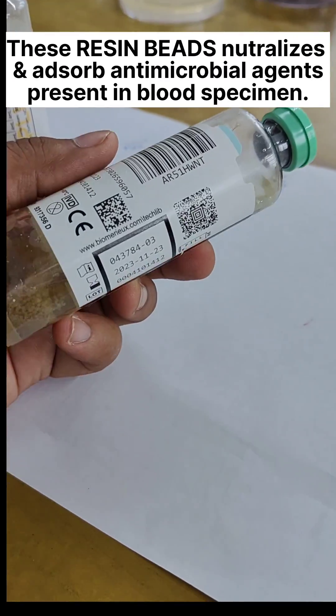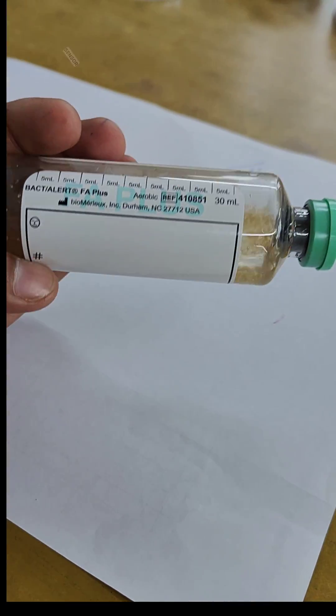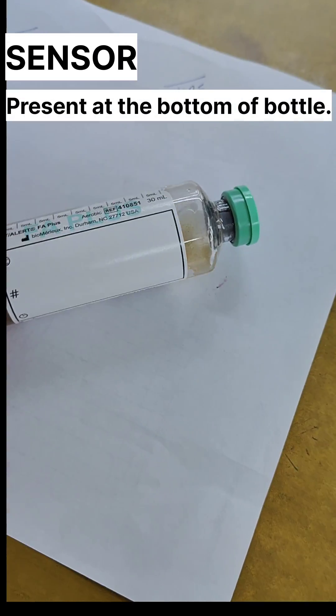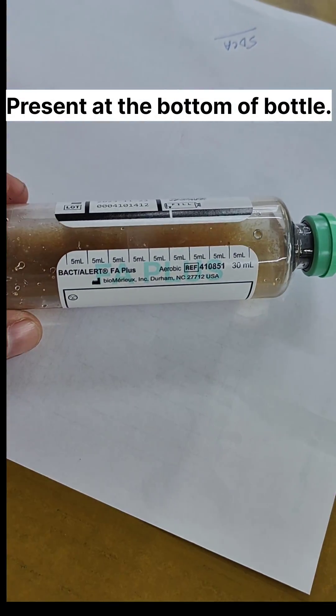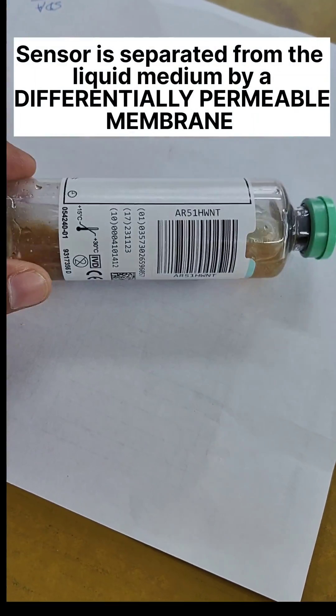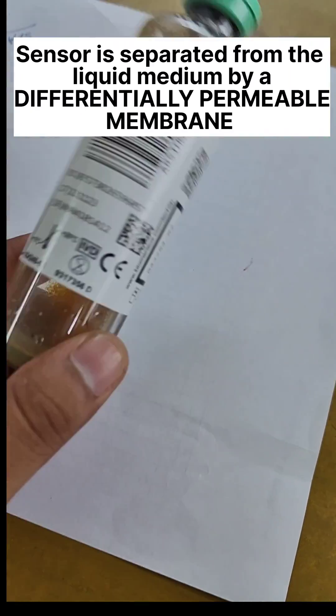You can easily see that a sensor is also present at the bottom of each bottle. This sensor is separated from the liquid medium by a differentially permeable membrane.